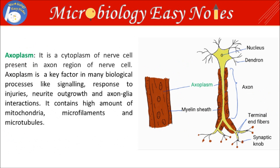Exoplasm: it is the cytoplasm of a nerve cell present in the axon region of the nerve cell. Exoplasm is a key factor in many biological processes like signaling, response to injuries, neurite outgrowth and axon gland reactions. It contains a high amount of mitochondria, microfilaments and microtubules.